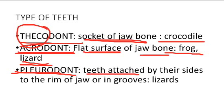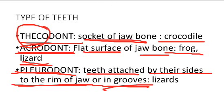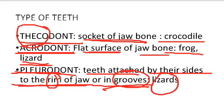The last type is pleurodont dentition, in which the teeth are attached by their sides to the rim of the jaw or in grooves. The teeth are not embedded in a socket — that would be thecodont. In pleurodont, the teeth are firmly attached in the groove or rim of the jaw, and the example is lizard.